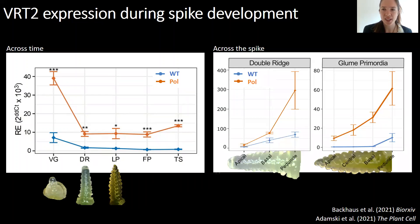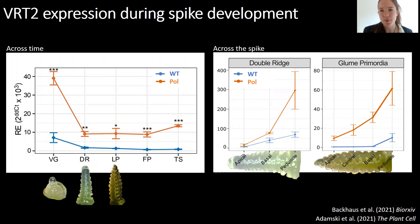But why would that affect basal spikelets differentially to central spikelets? I took a look at the apical, basal and peduncle sections individually by dividing the spikelet primordia further, and what I found was that expression was actually naturally always higher in the base than in apical sections, and in polonicum this effect was even increased.